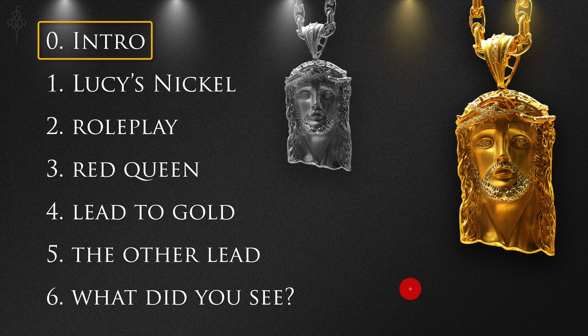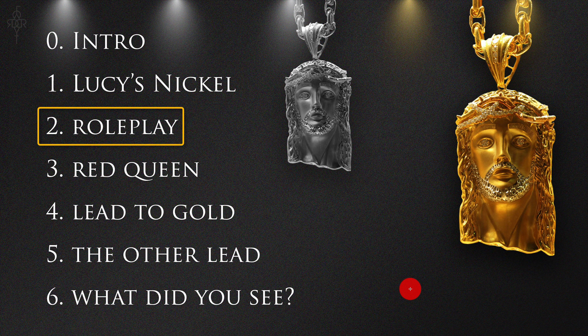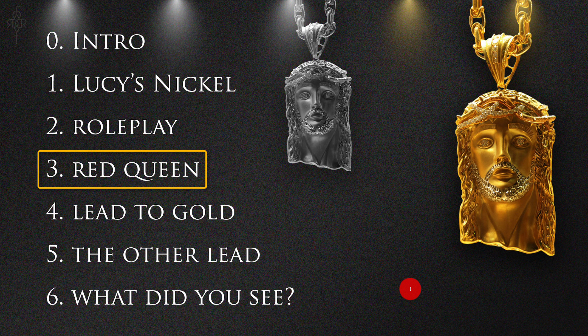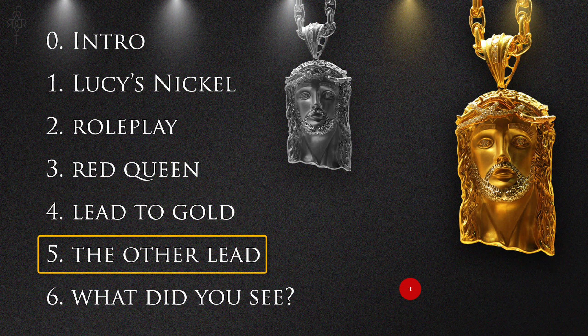But that was just for starters — that was the intro. Wait till you see some of the stuff I'm about to show you. Let's talk about the topics. Number one: Lucy's nickel. Number two: role play. Number three: this is going to be a massive truth bomb — the Red Queen. Number four: the topic itself, lead to gold. Number five and the last topic: the other lead. And I'd always love to hear what your observations are — keep them coming in the comment section below.